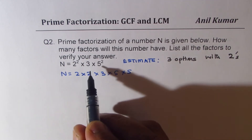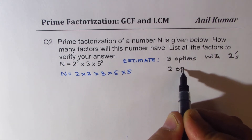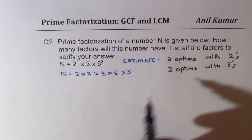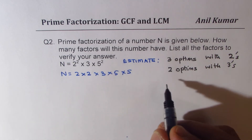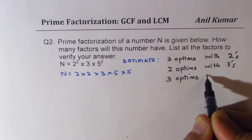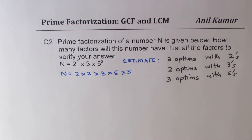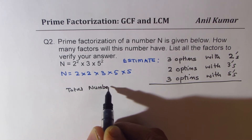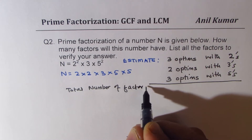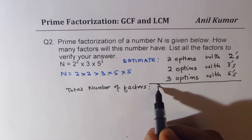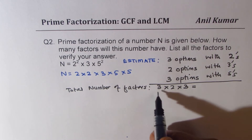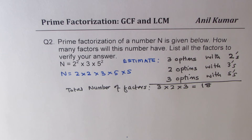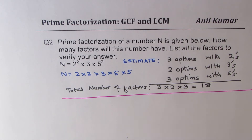With 3, there is only one three, so you may select it or not — 2 options. With 5, since there are two fives, you may select one five, two fives, or none — 3 options. The total number of factors is 3×2×3 = 18. So we expect 18 factors in total.